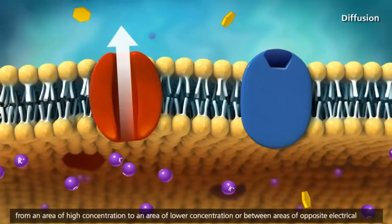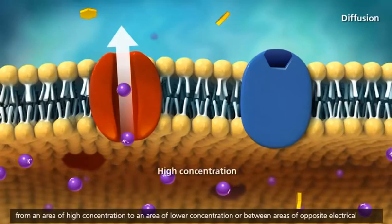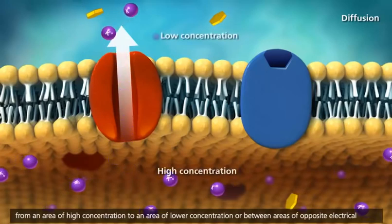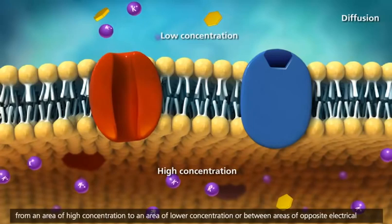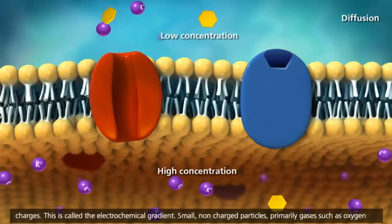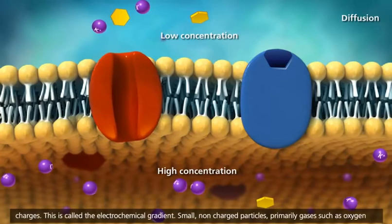From an area of high concentration to an area of lower concentration, or between areas of opposite electrical charges. This is called the electrochemical gradient.